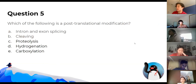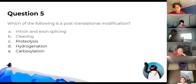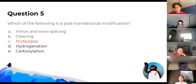Which one is a post-translational modification? There's a bit of a mixed response here. The answer is proteolysis, which is just a bit more specific — for example, when you produce insulin, you cut off the C-peptide and have the remaining insulin. Intron and exon splicing is post-transcriptional, so be careful of that.